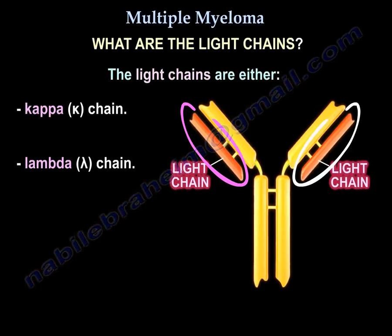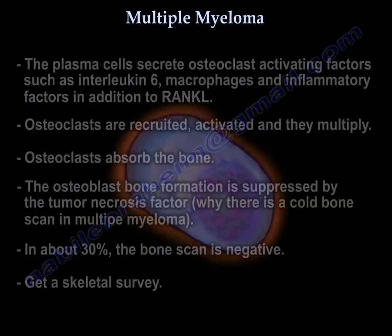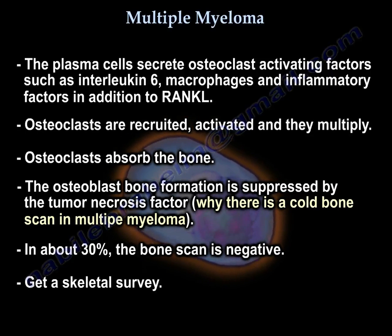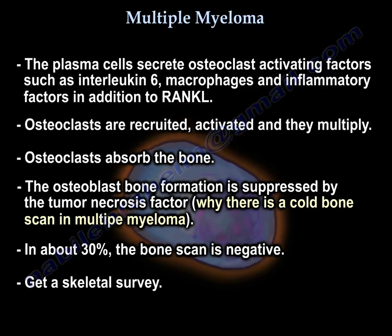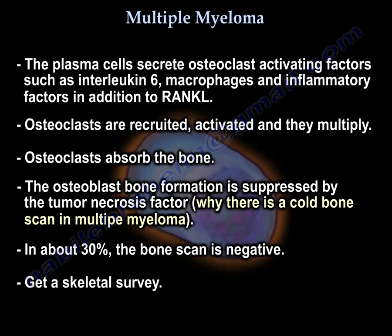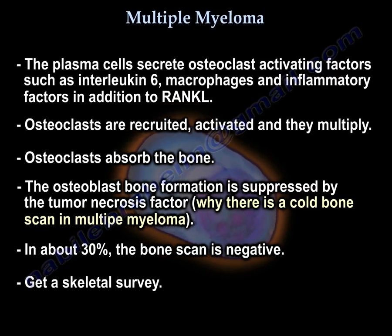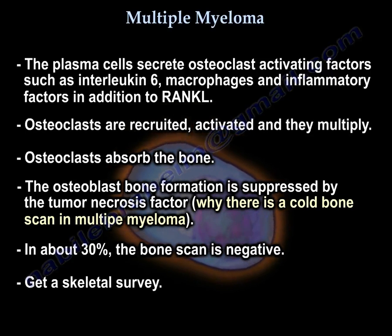Bence-Jones proteins are light chains released into the urine. The plasma cells secrete osteoclast-activating factors such as interleukin-6, macrophages, inflammatory factors, and RANK-L. Osteoclasts are recruited, activated, and they multiply and absorb bone. Osteoblast bone formation is suppressed by tumor necrosis factor, which is why the bone scan is cold in multiple myeloma.